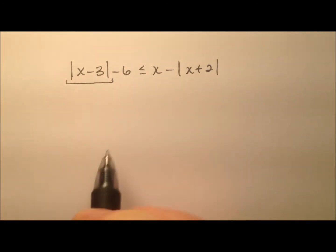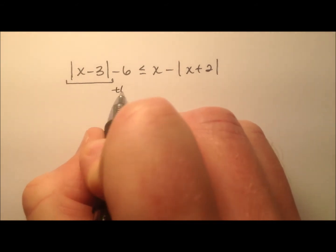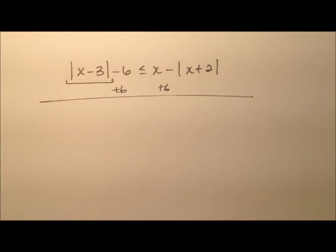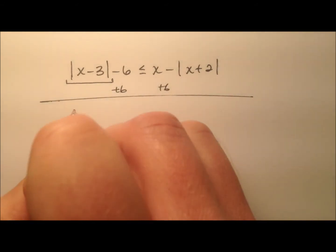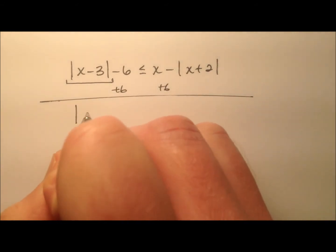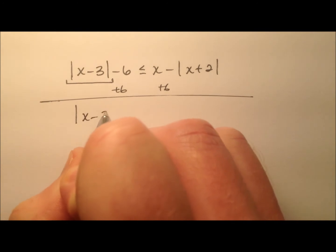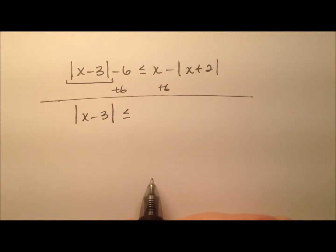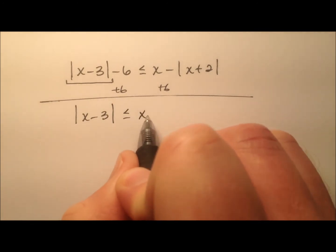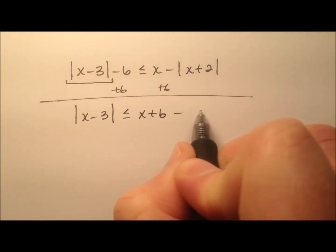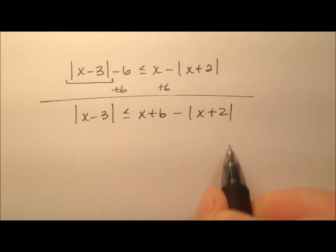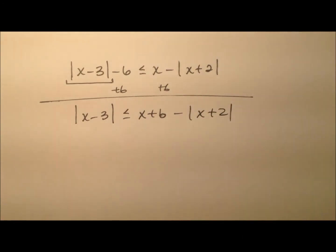Let's go ahead and isolate the first one, and we'll do so by adding six to both sides. So I have the absolute value of x minus three is less than or equal to x plus six, and then minus our other absolute value expression.